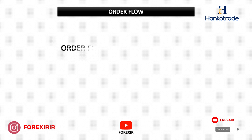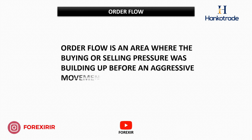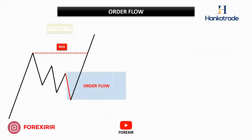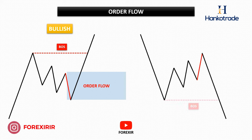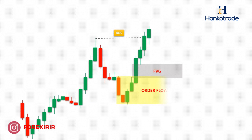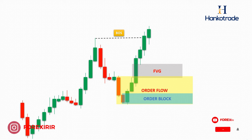Order flow represents an area where significant buying or selling pressure was accumulating before a forceful market movement. The bullish order flow zone represents where the most recent bearish pressure existed before the market shifted to a bullish phase. Conversely, the bearish order flow zone is where the last noticeable bullish pressure was observed before a bearish movement unfolded. It's important to emphasize that order flow areas hold significance as key supply and demand zones within the framework of smart money concepts. For example, in this situation, we notice a move that creates fair value gaps and breaks the market structure. These two candles represent the last bearish momentum just before a significant and dramatic shift in the market, so we mark them. The order flow area can be quite extensive and typically includes the order block within it.